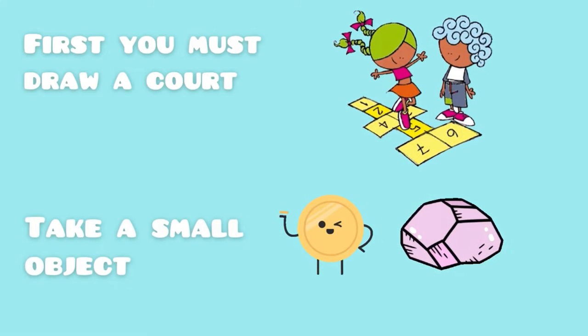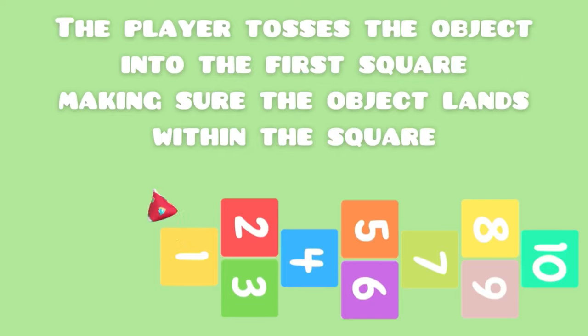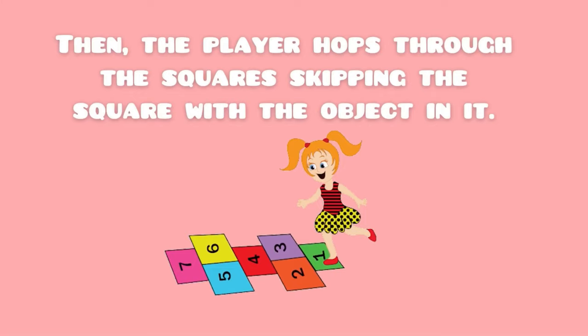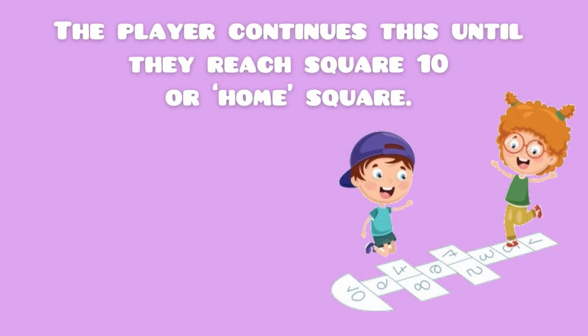The player tosses the object into the first square, making sure the object lands within the square. Then the player hops through the squares, skipping the square with the object in it. The player hops on a single leg when it comes to a single square.